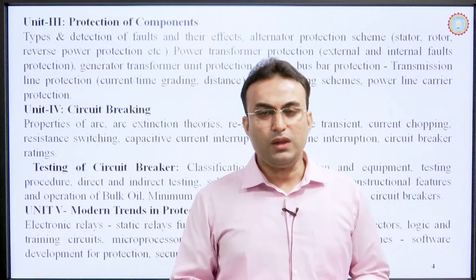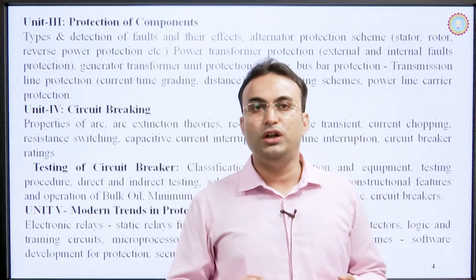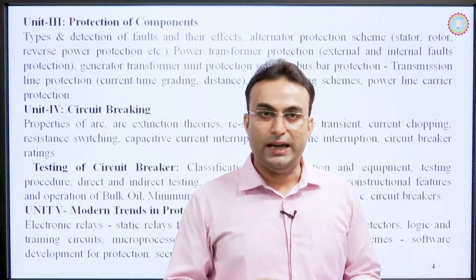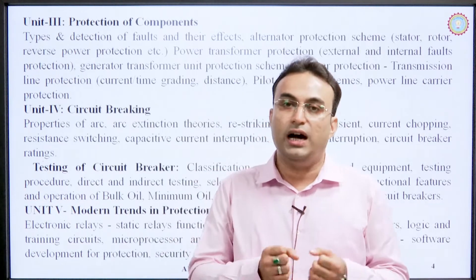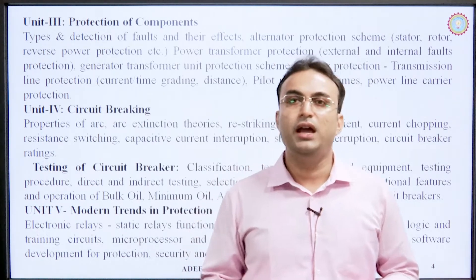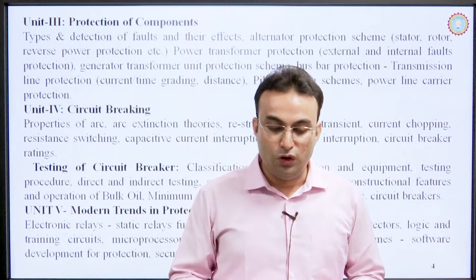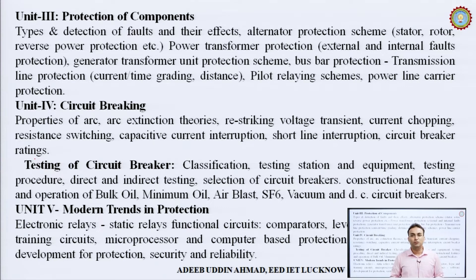Unit 4 is dedicated to circuit breakers, a very essential and important component of power system protection. It covers arc extinction theories — since arc is a very extensive phenomenon in circuit breakers that must be quenched as soon as possible — circuit breaker components, current chopping, resistance switching, capacitive current interruption, ratings, and testing. The second part of Unit 4 covers classification of circuit breakers: bulk oil, minimum oil, and air blast or SF6 types, including construction features and operating mechanisms.